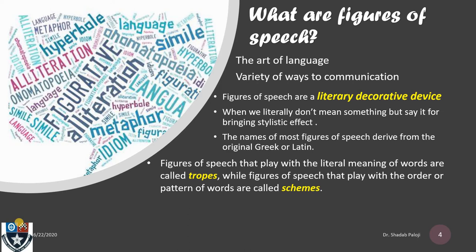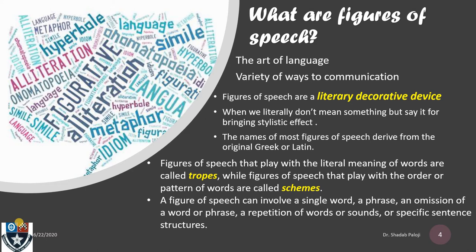While Figures of Speech that talk about order and pattern of words are called schemes — rhyme schemes, if you remember. We studied those when teaching a poem, talking about the rhyming scheme. So those are rhyming schemes when we see the order or pattern of words. But when we are looking at the literal meaning of words, we call it tropes. Figures of Speech can involve a variety: a single word, a phrase, an omission or repetition of a word or sound, or a specific sentence structure.